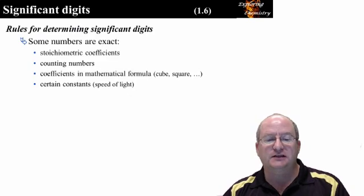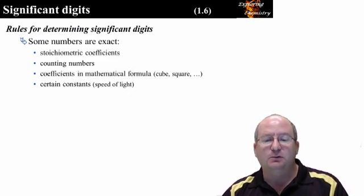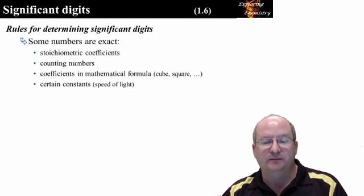In calculations, some numbers are exact, which means that they are not considered when determining the number of significant digits. You can assume that these numbers have an infinite accuracy.